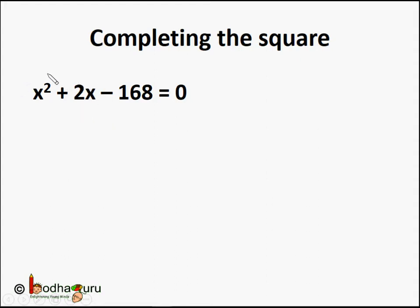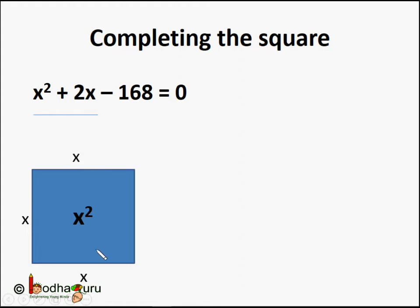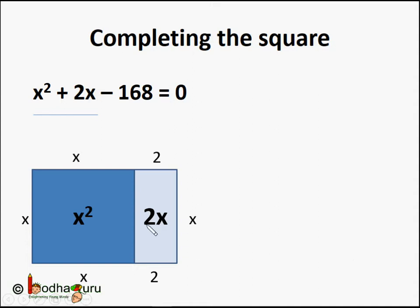First, focus on x squared plus 2x. We can represent x squared as a square with x centimeter sides, so its area equals x squared — this is a dark blue square. There is also a rectangle with sides 2 centimeters and x centimeters, whose area is 2 times x, which equals 2x — this is the light blue rectangle. The combined area of these two figures represents x squared plus 2x, the first two terms of our equation.